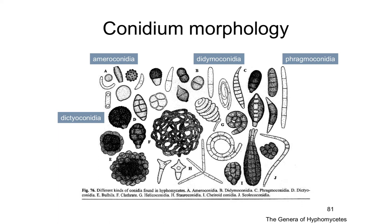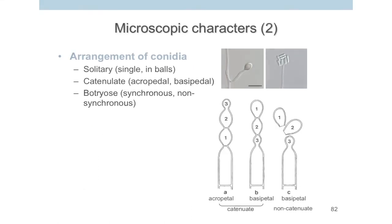Ameroconidia means there is no septation. Didymoconidia means there is only one septum separating two cells. Phragmoconidia have multiple septa. Dictyoconidia have both horizontal and vertical septation, making them look like a muriform pattern. There is a specific term for each kind of conidial shape. The second important feature is the arrangement of conidia.